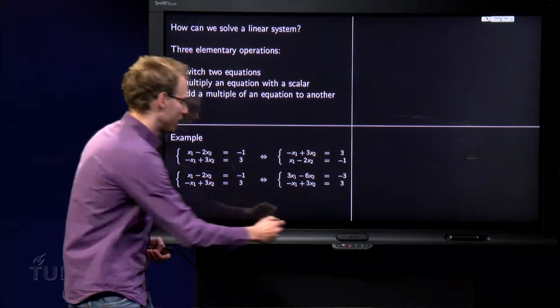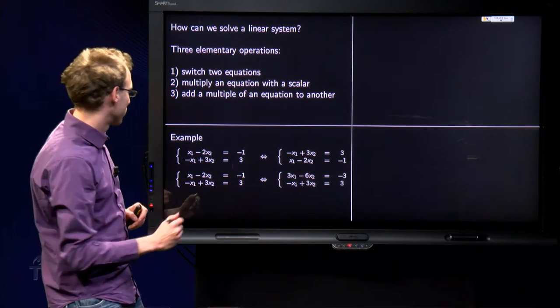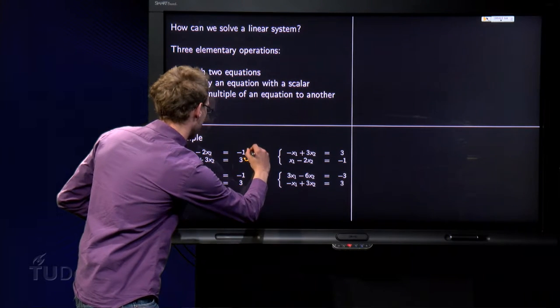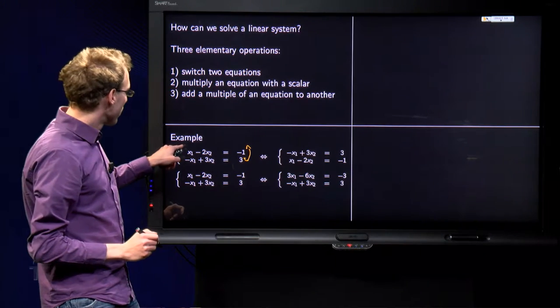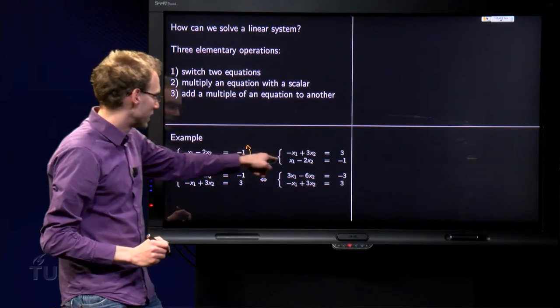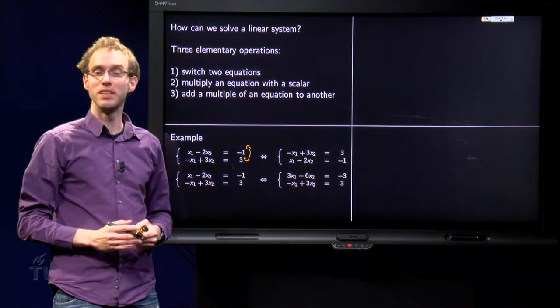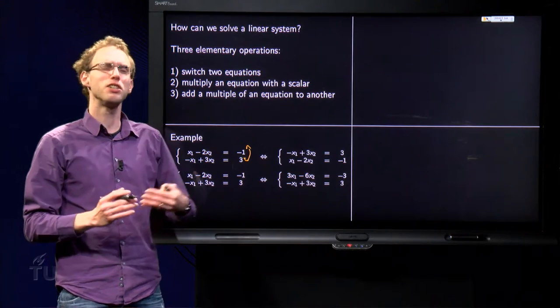What do we mean by switching two equations? We denote it as follows: switch. What we do is write this one as a second equation and the second equation as the first equation. That's all we do. Obviously the system is unchanged; this seems rather trivial.